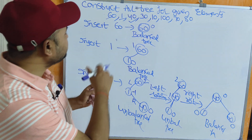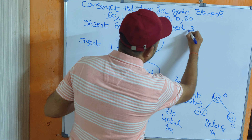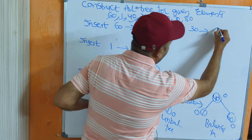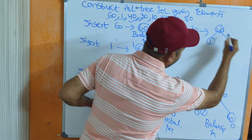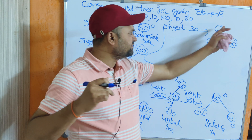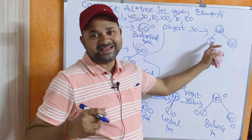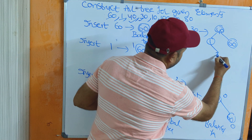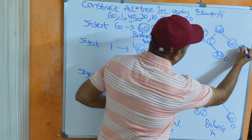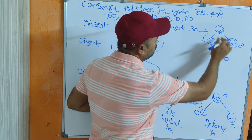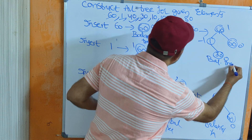Next, insert 30. The current root is 40, left child is 1, right child is 60. Compare 30 with 40 — less than 40, go left. Compare 30 with 1 — greater than 1, so 30 becomes 1's right child. Calculate the balance factor: -1 for node 1; for node 40, left subtree height is 2, right is 1, so 2 minus 1 = 1. This is a balanced tree.